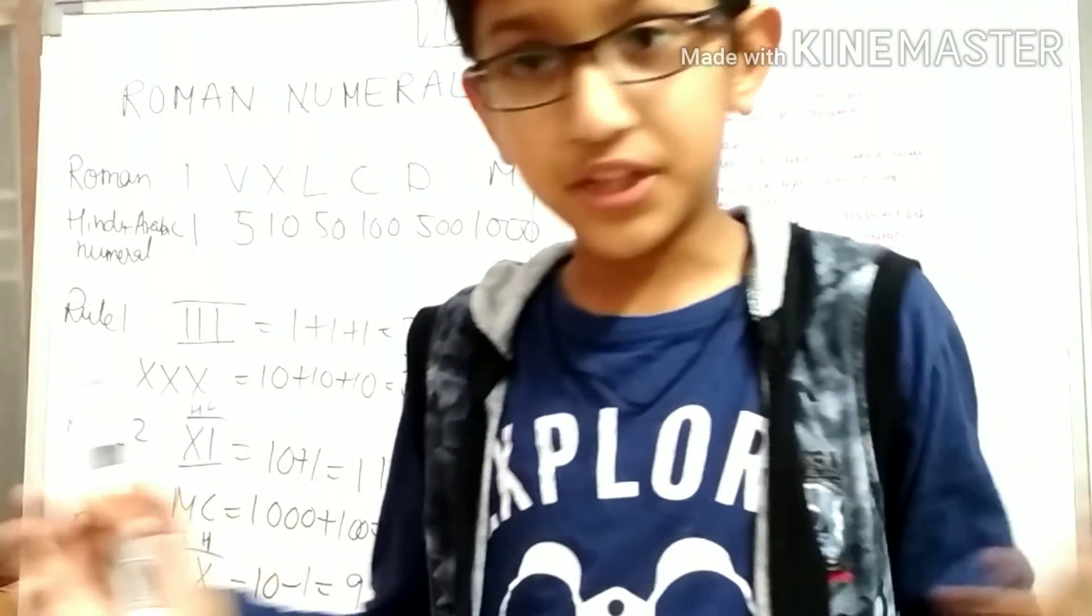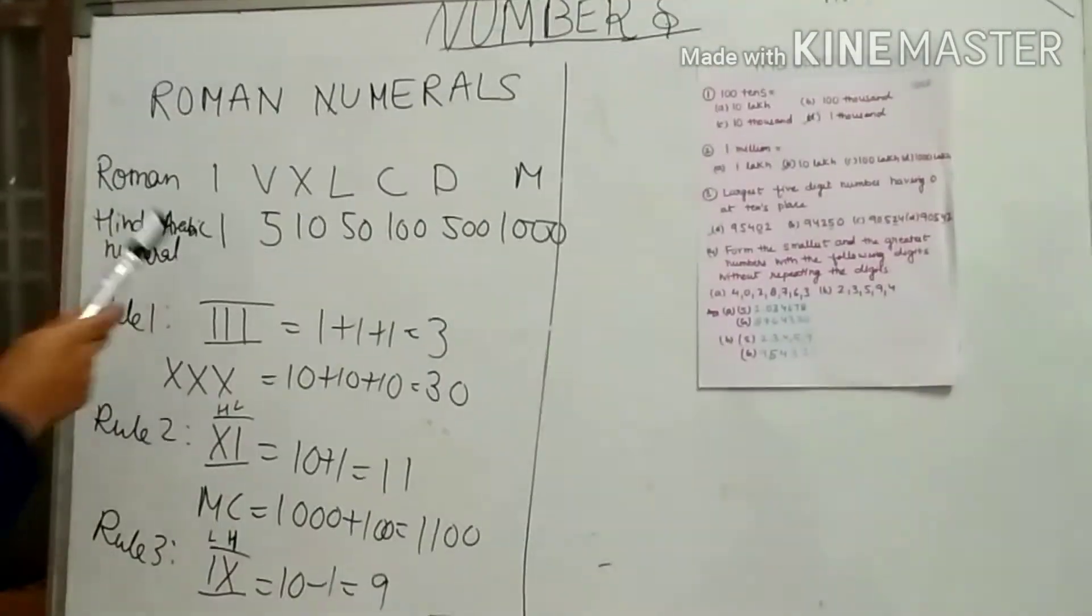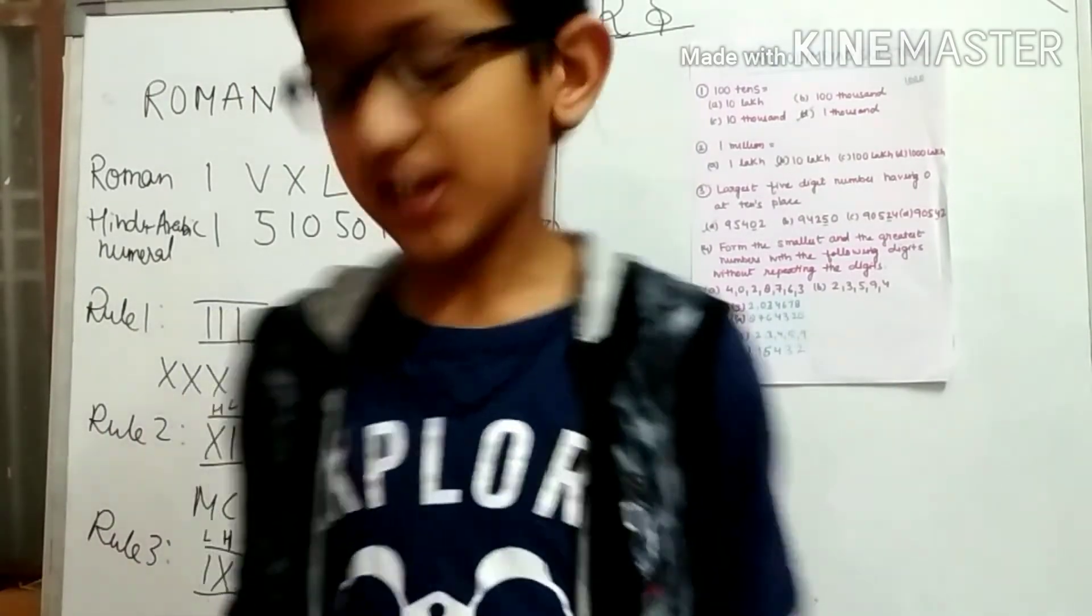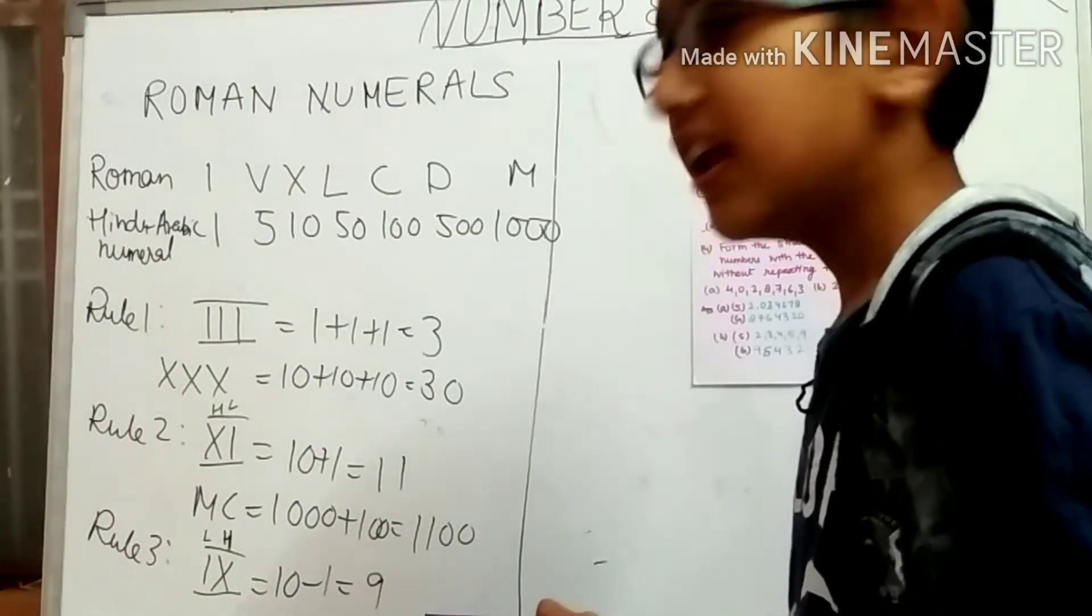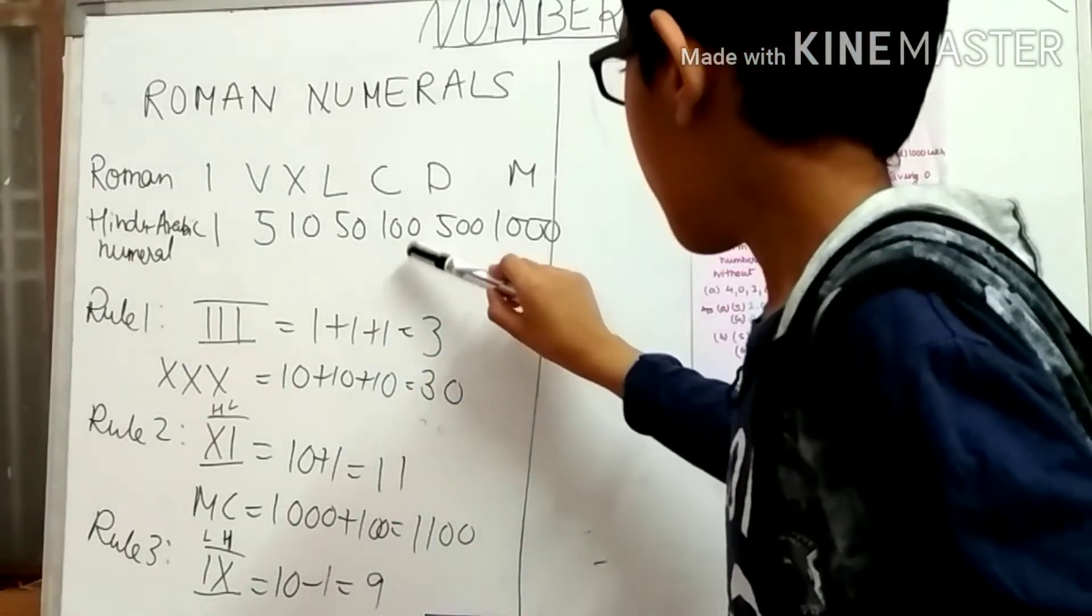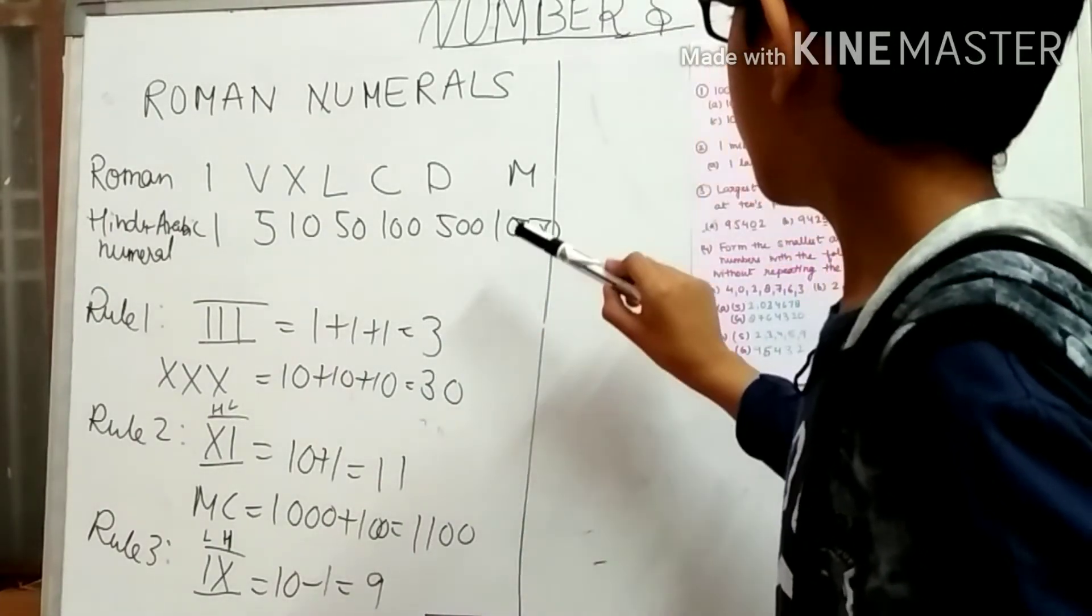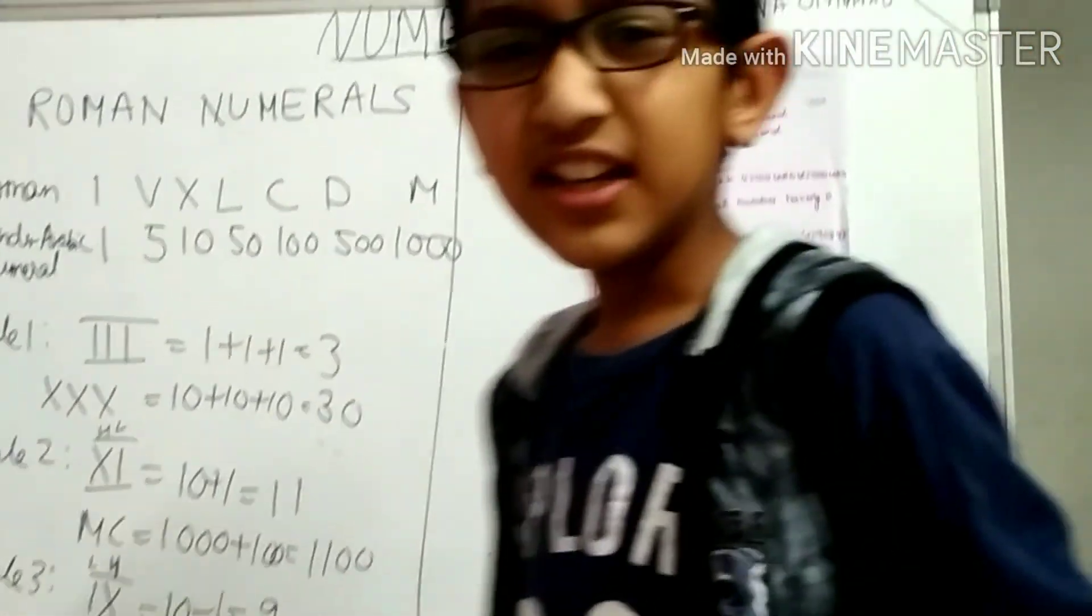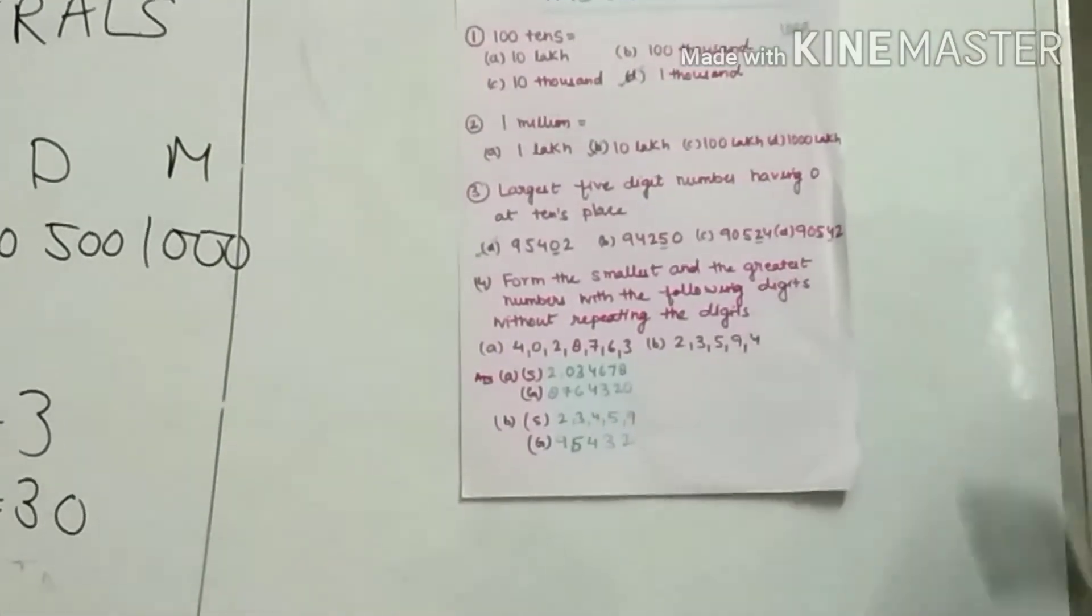I have a trick you can use to remember Roman numerals. That trick is LCD monitor. LCD monitor: L is for 50, C is 100, D is 500, M is 1000.